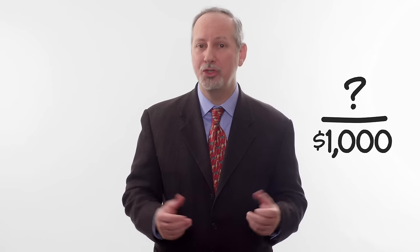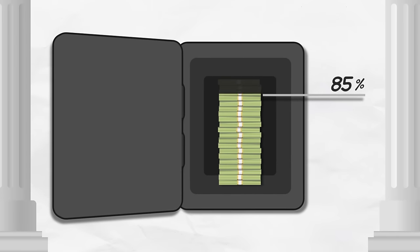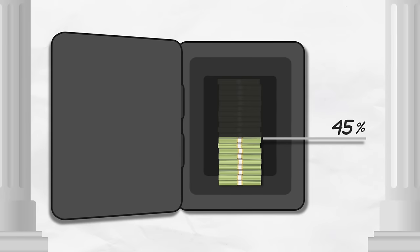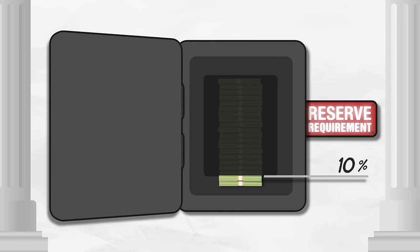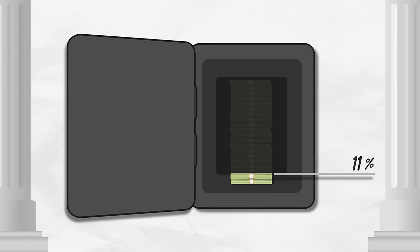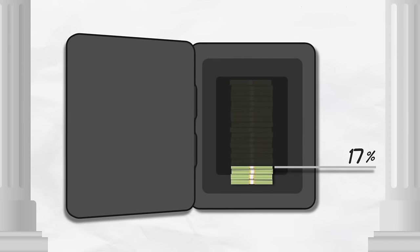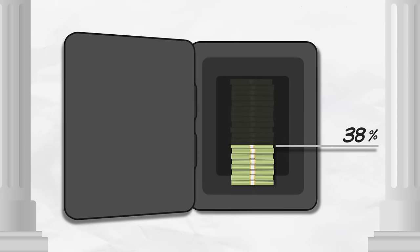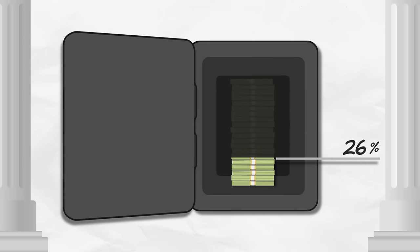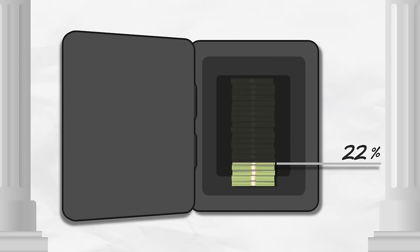So what fraction of your deposit do banks keep in reserve? Large banks in the United States must keep in reserve at least $1 for every $10 in deposits. We say large banks are required to have a reserve ratio of at least 10%. But banks often have higher reserve ratios depending upon how liquid they want to be. If a bank is worried that its customers might withdraw most of their money, or if bank loans are just not that profitable, banks will hold more reserves. So the reserve ratio can be greater than 10%, and it can change over time.